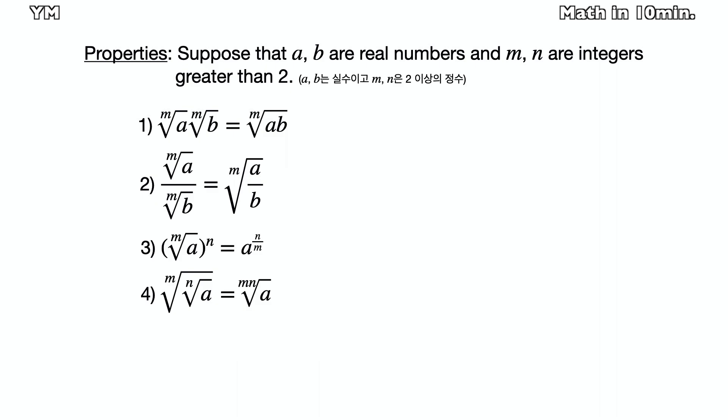There are also properties of radicals which are similar to the exponent. First, nth root of a times nth root of b equals to mth root of ab. Second, nth root of a divided by nth root of b equals to nth root of a over b.